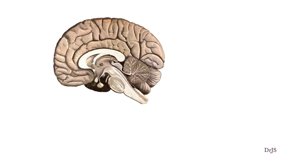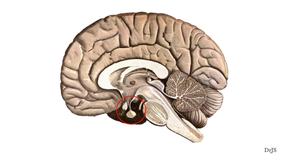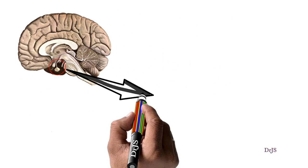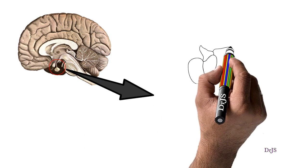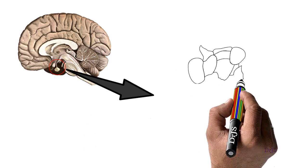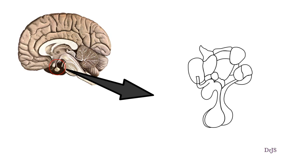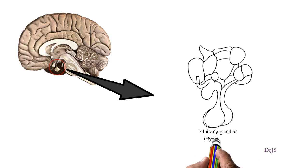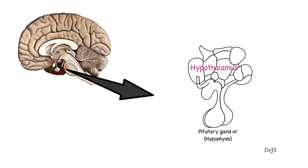Now we will see how the thyroid hormone is regulated. To understand the concept we have to look at the pituitary gland. In a sagittal section of the brain, the pituitary gland looks like this. There are some collections of nuclei above the pituitary gland or hypophysis called the hypothalamus.